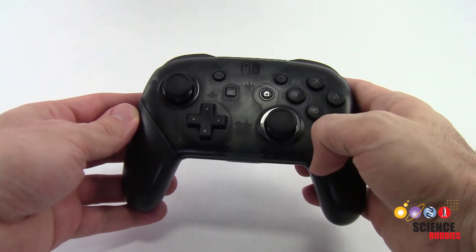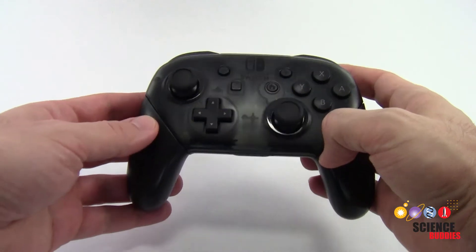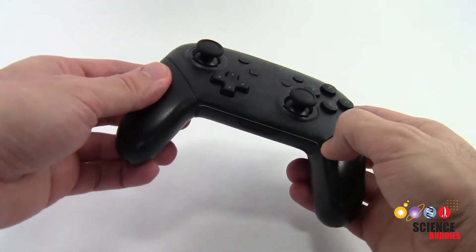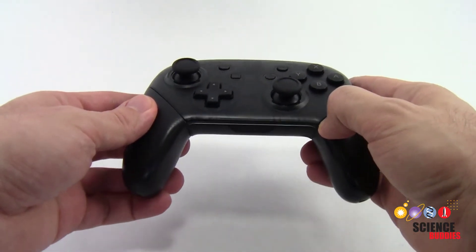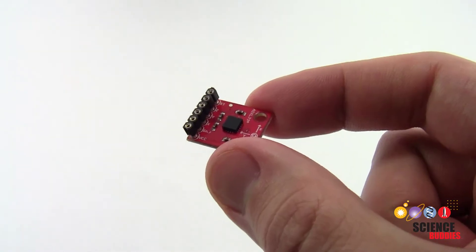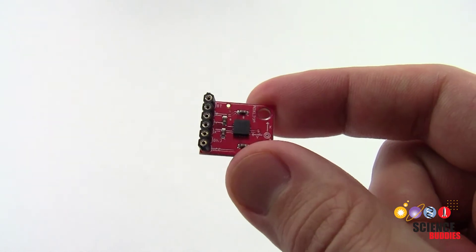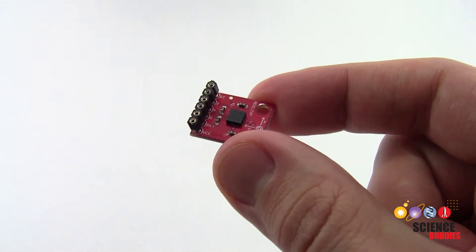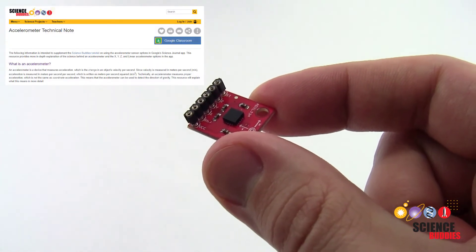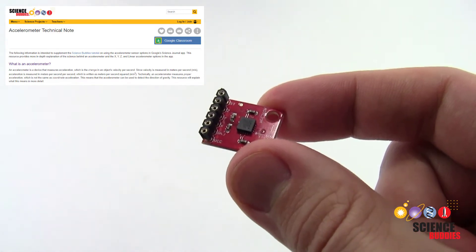However, most modern video game controllers also include motion control. This allows you to tilt or shake the controller to control action on screen. They do this using a device called an accelerometer. We won't go into all the technical detail of how an accelerometer works in this video, but if you'd like to learn more, we have a detailed explanation on the Science Buddies website.